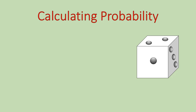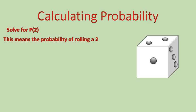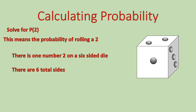Let's calculate one using a die, or a six-sided number cube. Go ahead and solve for P(2). P(2) means the probability of rolling a two. There is one number two on a six-sided die, and there are six total sides, so the probability is one out of six. There's one number two and six total sides. That would actually be the probability of rolling any of the numbers — the probability of rolling a one is also one out of six.